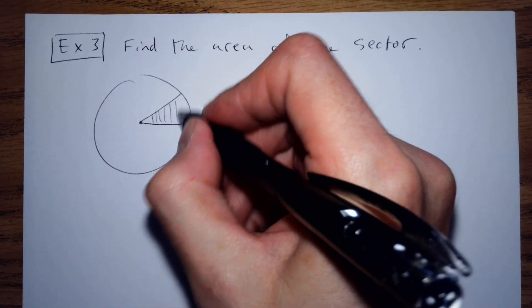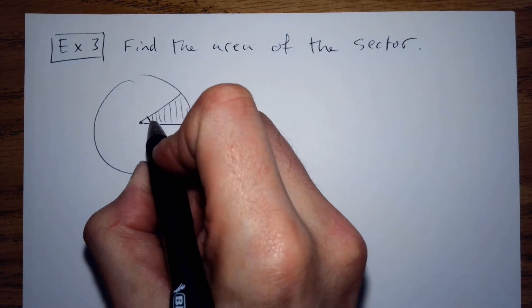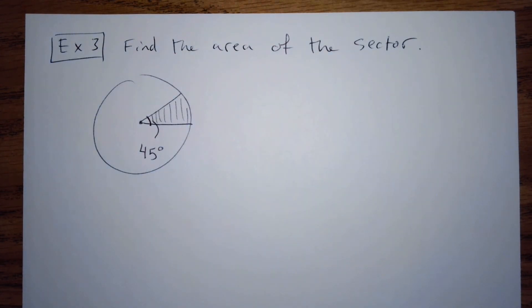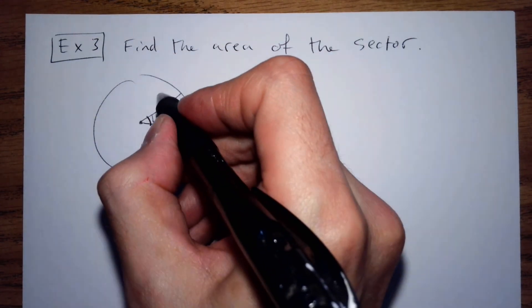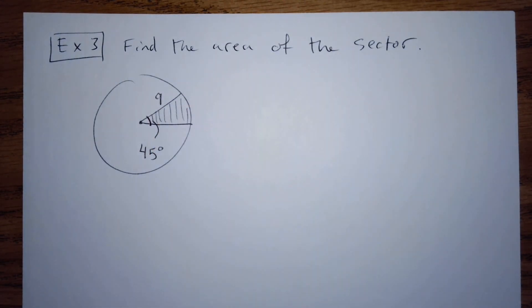This is going to be the sector. The degrees for this is going to be 45 degrees. And there's going to be a radius of 9 for this circle, radius of 9.